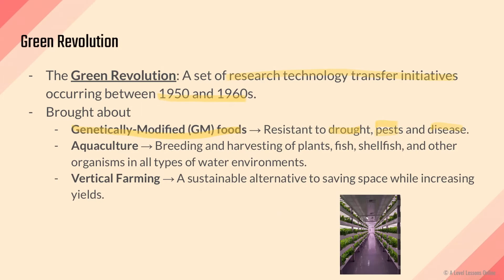We also have aquaculture — think of 'aqua' as being in the ocean. It looks at the breeding and harvesting of plants, fish, shellfish, and any organisms that live in water-based environments. This develops food supply from areas of the sea and ocean, such as fish and shellfish, which are facing quick extinction. Aquaculture has helped to ensure they can be produced at a faster rate to meet the needs of the population.